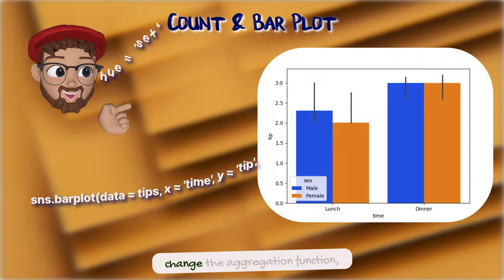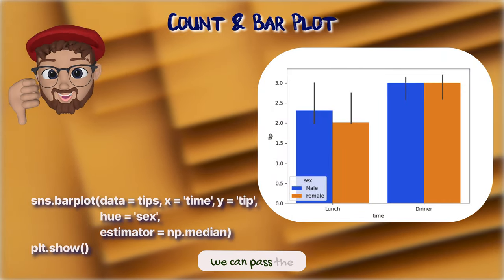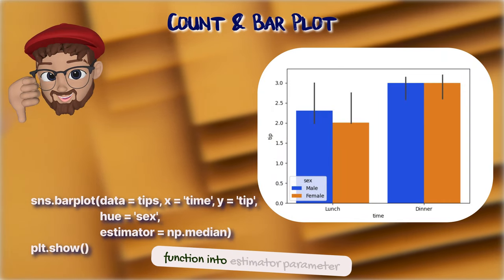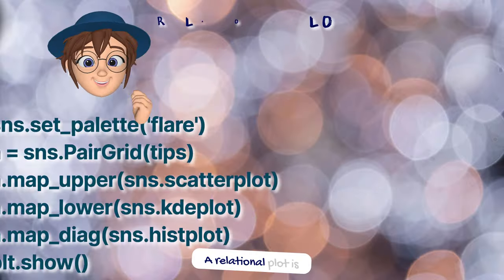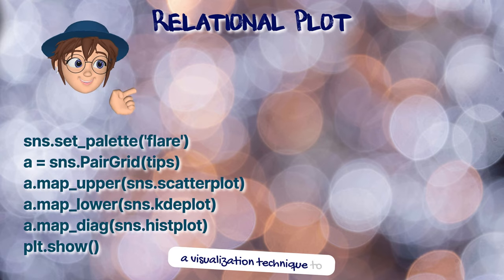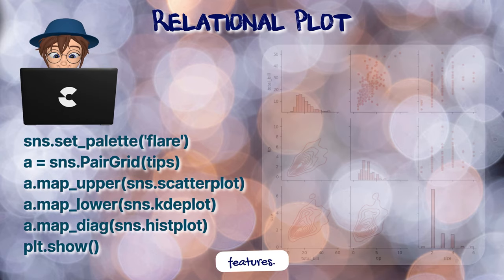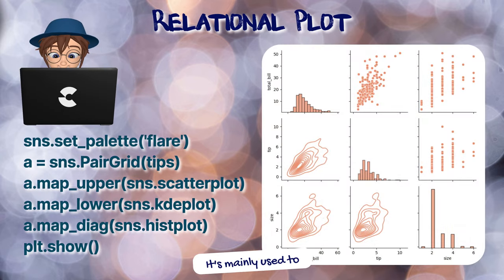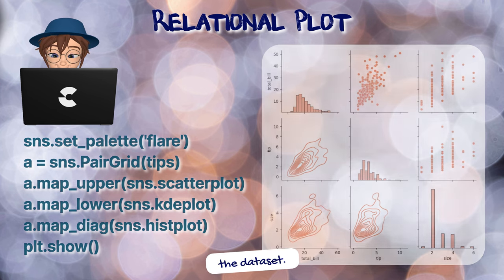If we want to change the aggregation function, we can pass the function into the estimator parameter. A relational plot is a visualization technique to show the relationship between features. It's mainly used to identify any kind of patterns that exist within the dataset.